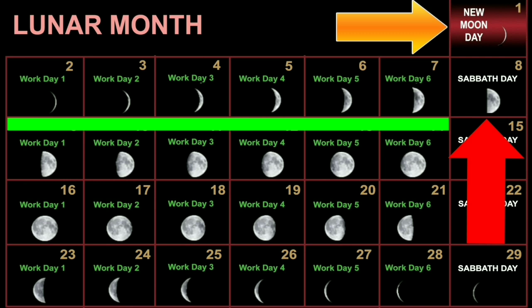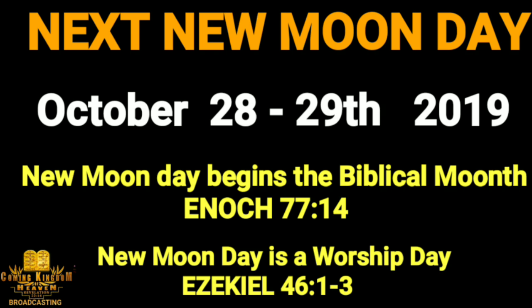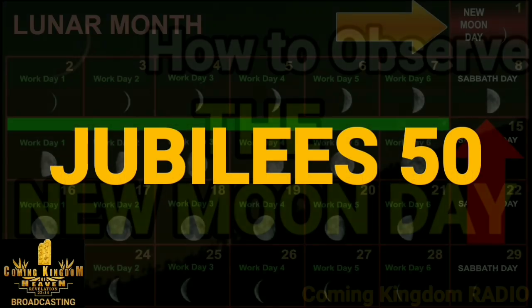On the Sabbath day, you don't go to work, you don't cook, you worship, and you rest. You don't travel on the Sabbath day. You can read Jubilee chapter 50 to see all the things you can and cannot do on the Sabbath day. If you don't have the book of Jubilee, you can Google it and read all the laws about keeping the Sabbath.